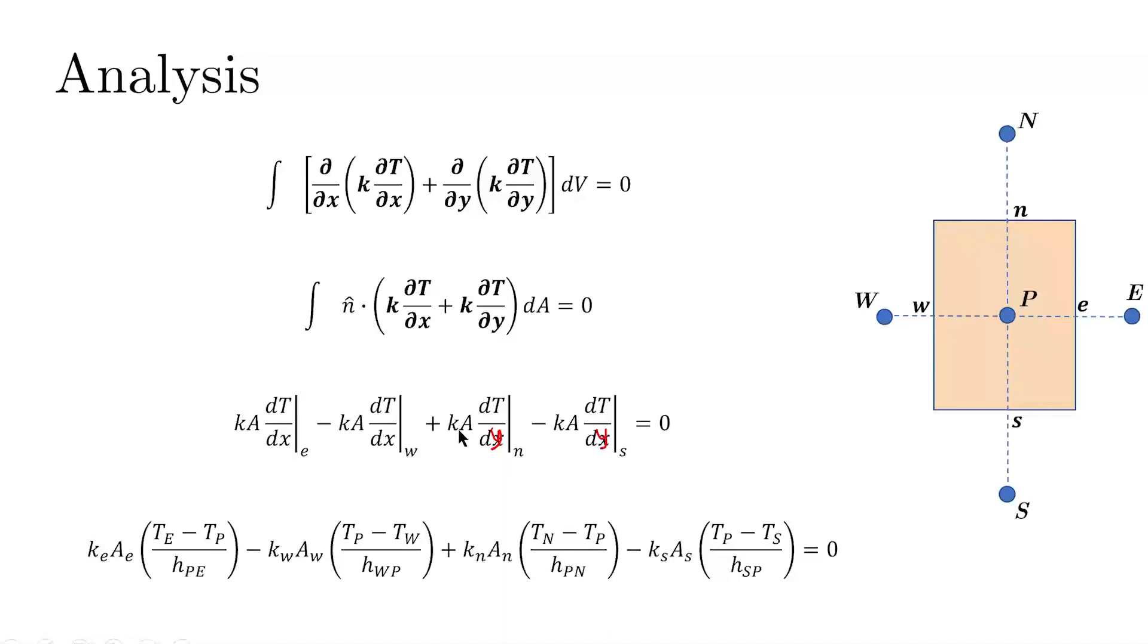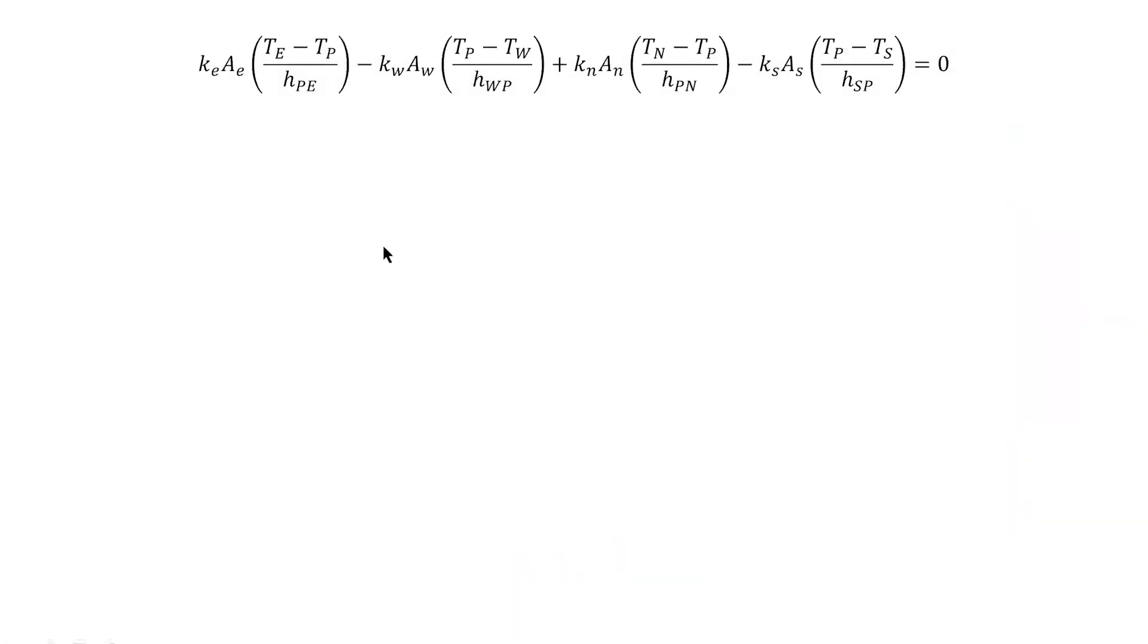Now, for the north term, we have kn times a n, just like before. And when I would discretize it on this face, when I would write the dt over dy at the north face, I would simply write that derivative term as t n minus t p. Because it is a gradient in the y direction, so that is why I have t n minus t p, divided by h p n, that is the spacing between the point p and point n. And similarly, it can be done for the south face as well.